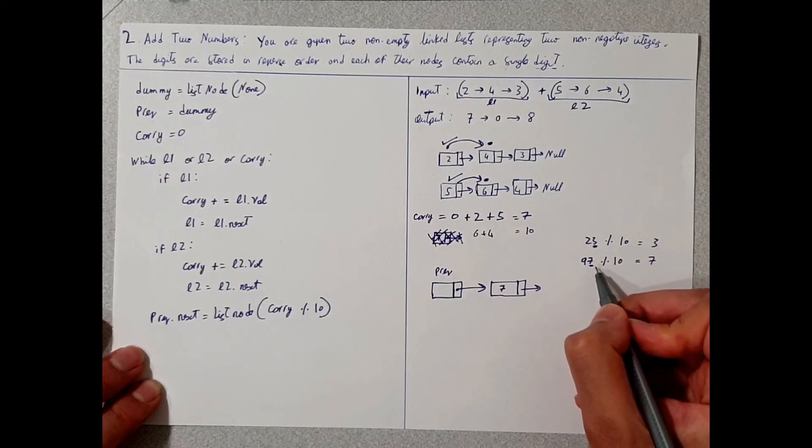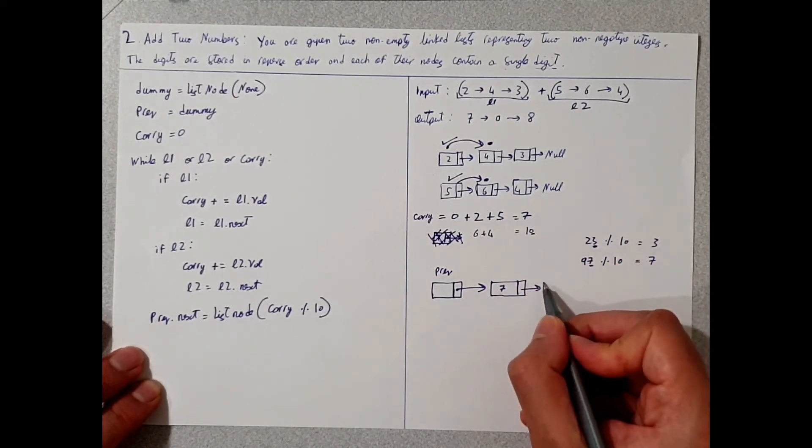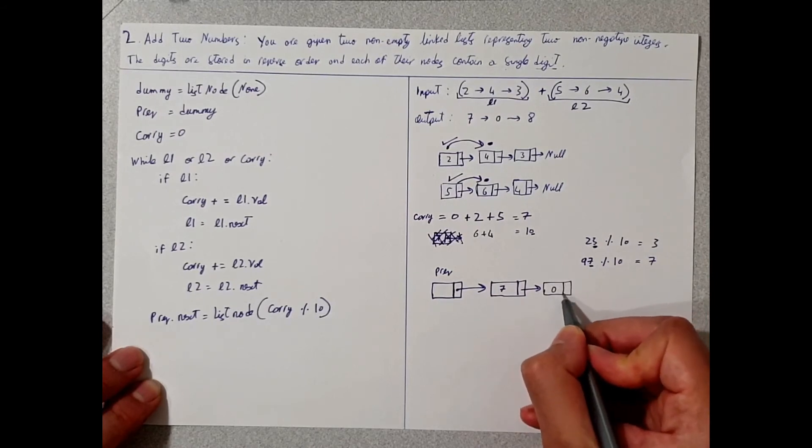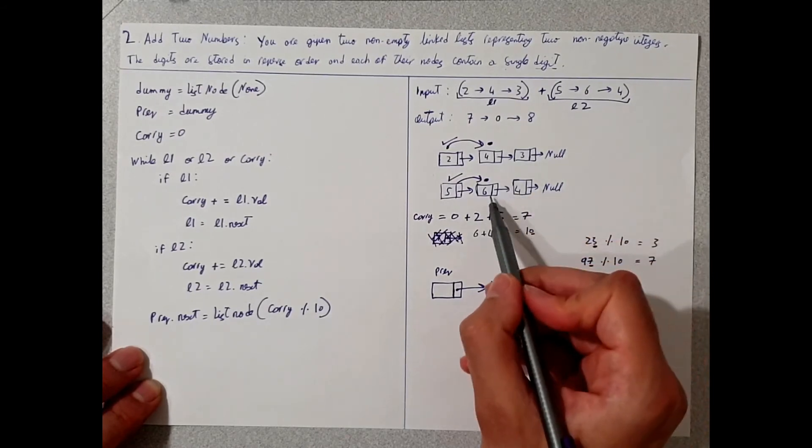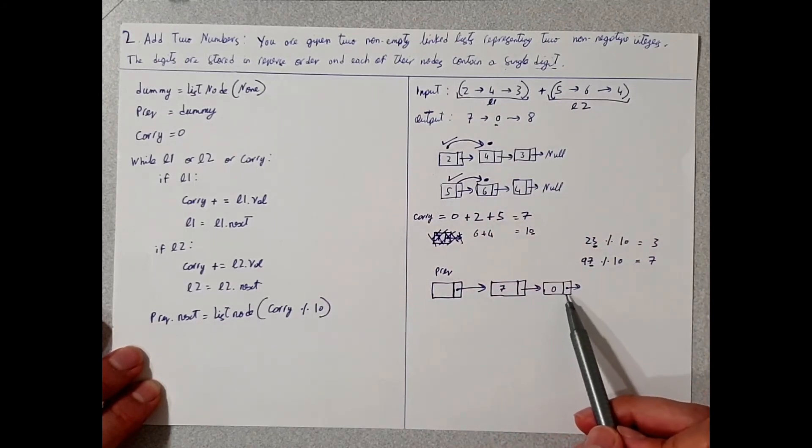So the modulus of 10 will be 0. So the next one would be 0, which is this one here. So that's the point of this: you can only store a single digit, and that single digit will be the last value here.